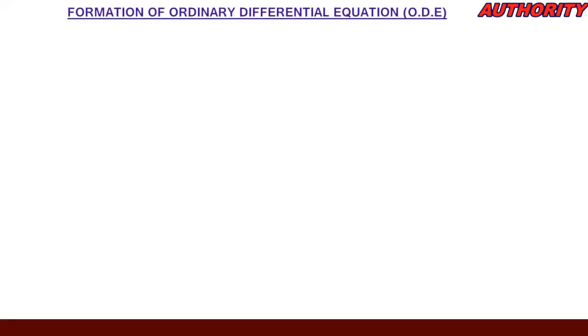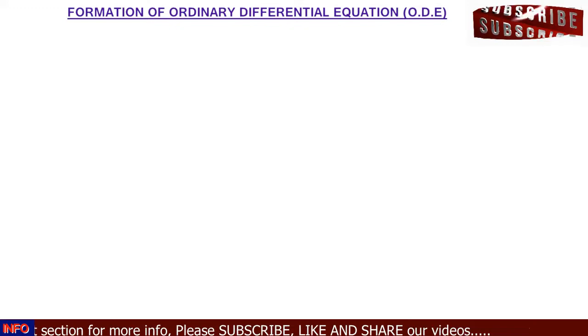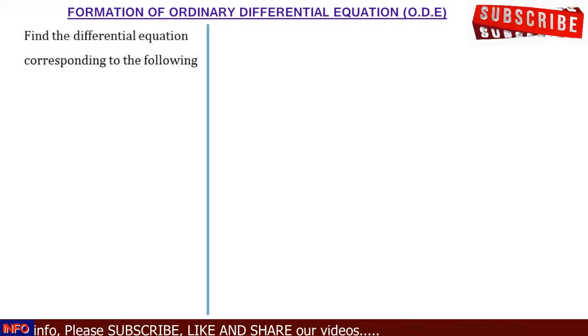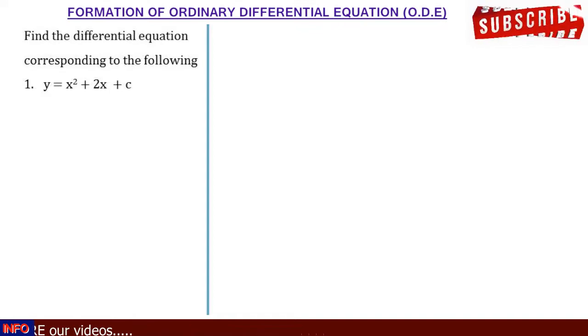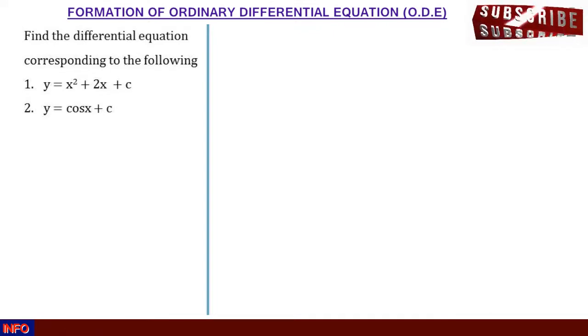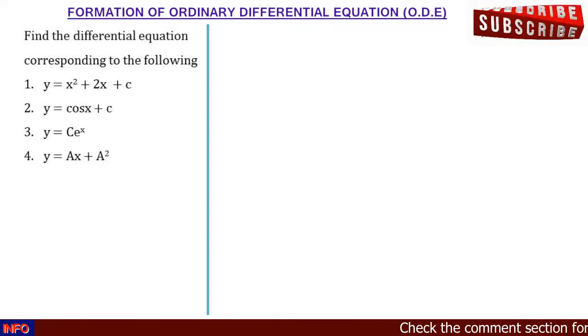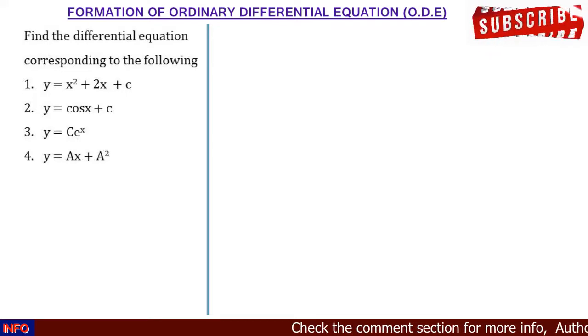Welcome again. We are still talking about differential equations. In our previous lesson we talked about the meaning, the types, the order, the degree, and so many things about differential equations. But today let's talk about formation of differential equations — how we can form a differential equation. We are asked to find a differential equation corresponding to the following: number one, y = x² + 2x + c; number two, y = cos x + c; number three, y = ce^x; number four, y = ax + a².